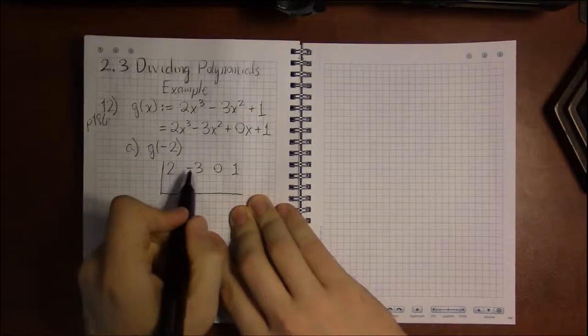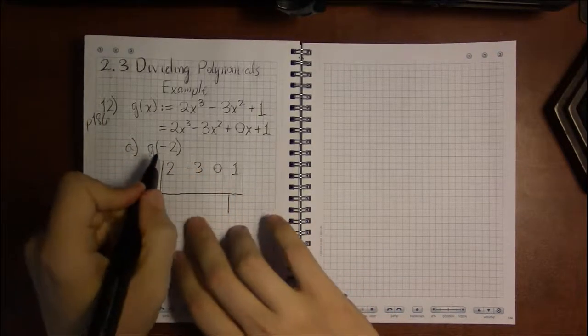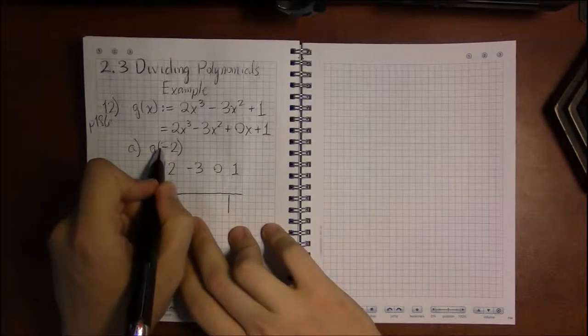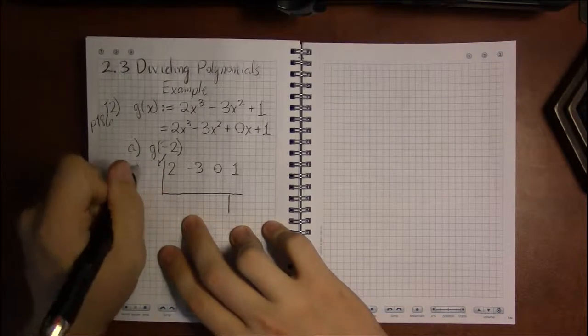So the 2, minus 3, 0, 1. And this time there's no translation that we have to do. We just copy the input, copy the x value.